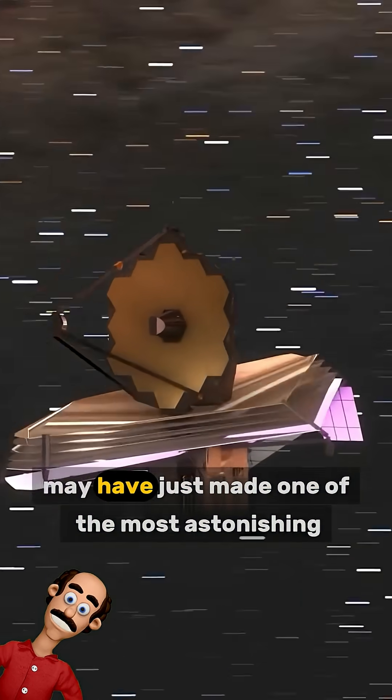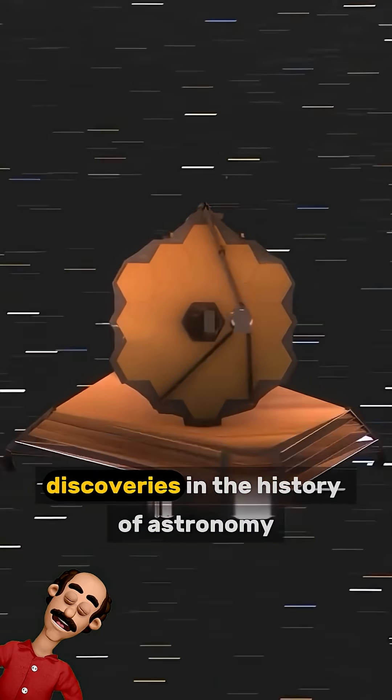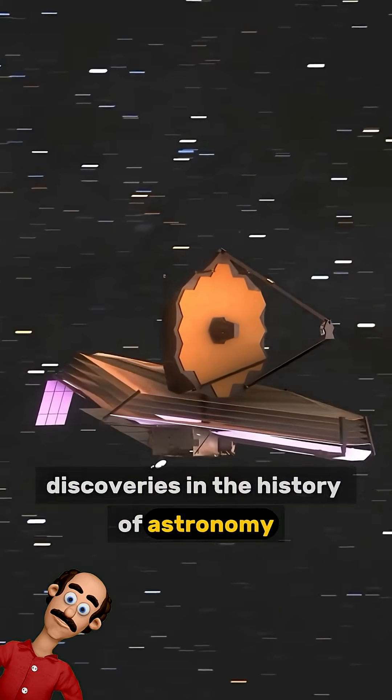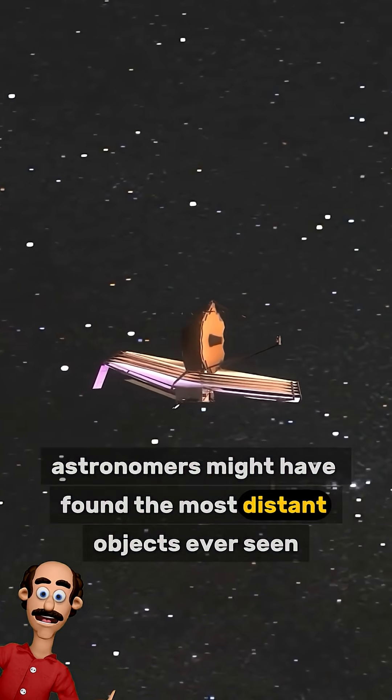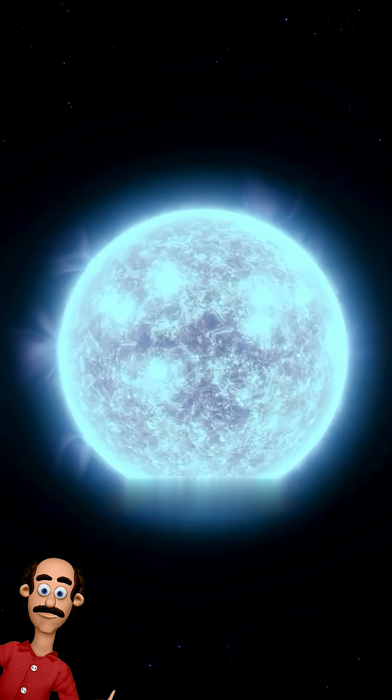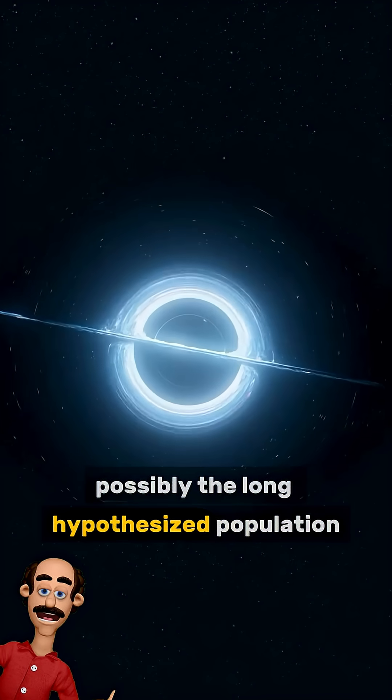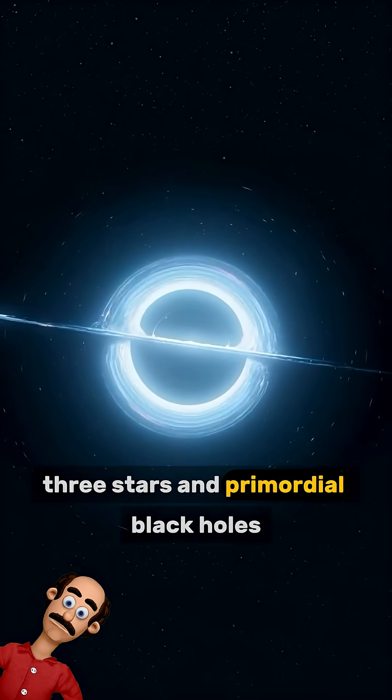The James Webb Space Telescope may have just made one of the most astonishing discoveries in the history of astronomy. Using deep space data, astronomers might have found the most distant objects ever seen, possibly the long hypothesized Population 3 stars and primordial black holes.